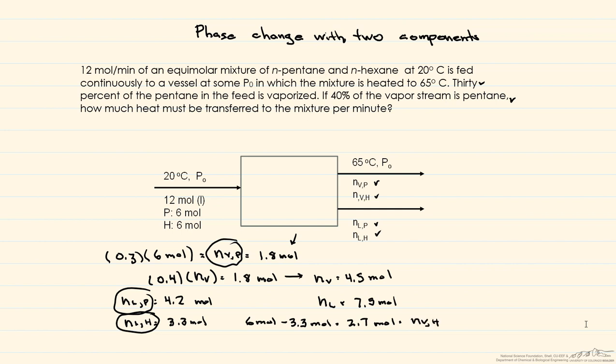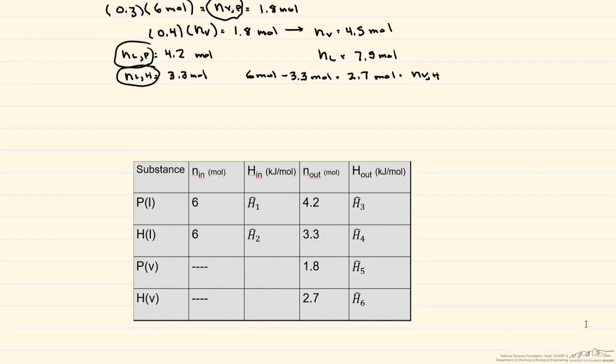So next we'll construct an enthalpy table and put in what we know. So what's our next step? We need to choose our reference state. So in a reference state, you have to determine what your phase, your temperature, and your pressure are going to be.